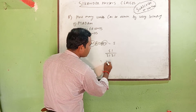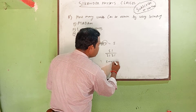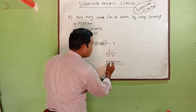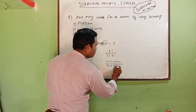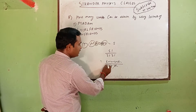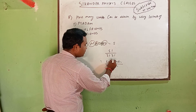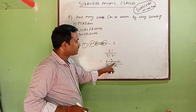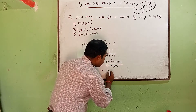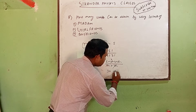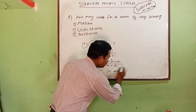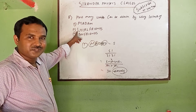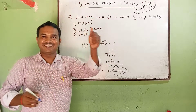So it becomes five into four into three into two into one, divided by two into one, into two into one. Cancelling out, we get five into three into two, which equals thirty. So the answer is 30. Now solve two more questions on your own.